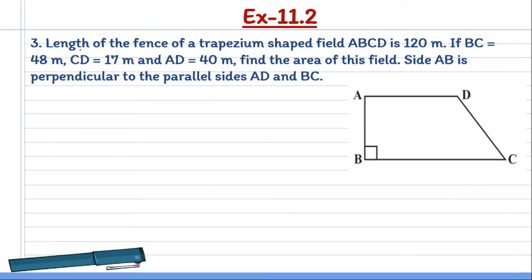So the question number 3 is, length of the fence of a trapezium shaped field ABCD is 120 meter. A trapezium shaped field ABCD has total fencing length of 120 meter. The boundary around it has a total length of 120 meter. That is, the perimeter of trapezium shaped field is equal to 120 meters.